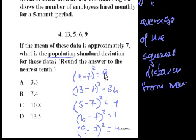So the 9 is the square of how far 4 is from 7, 36 is the square of how 13 is from 7. So each of these are the squared distances of each of the data points from the mean. That's where we got the 7 from, the average of these numbers.